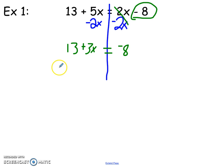Next, undo my addition and subtraction. So I'll subtract 13 from each side. 13 minus 13 is 0, so I just have 3x. If I owe 8 and I owe 13, altogether I owe 21.